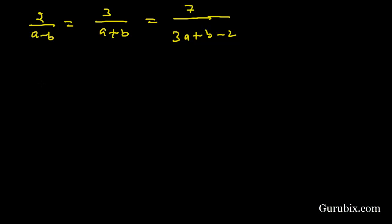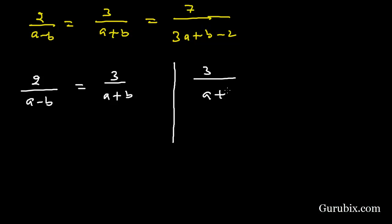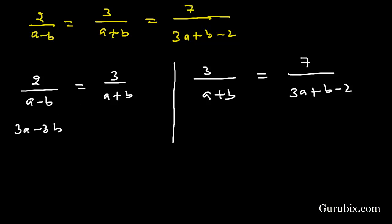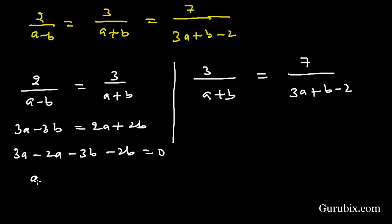From 2 over (A minus B) equals 3 over (A plus B), if we cross multiply, we have 3A minus 3B equals 2A plus 2B. This means 3A minus 2A minus 3B minus 2B equals 0, which gives us A minus 5B equals 0. Suppose this is equation number 1.